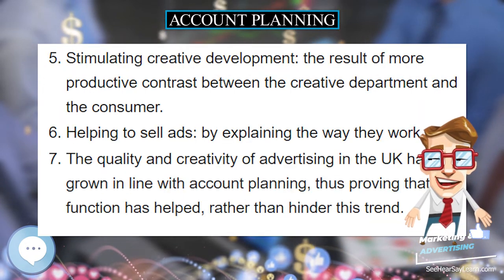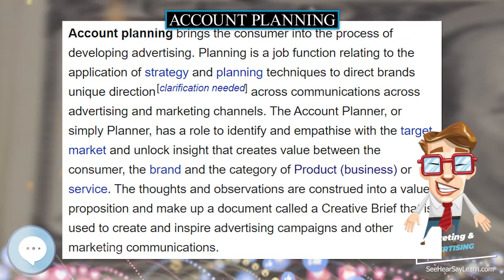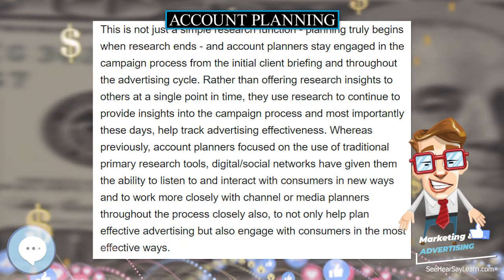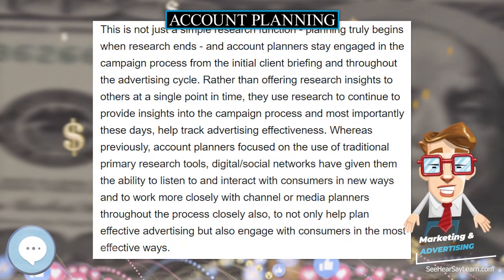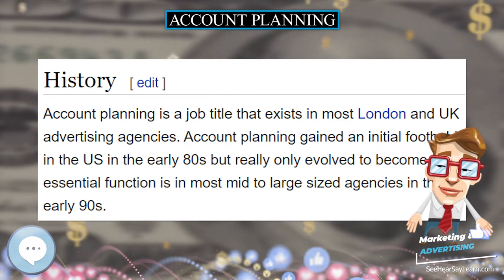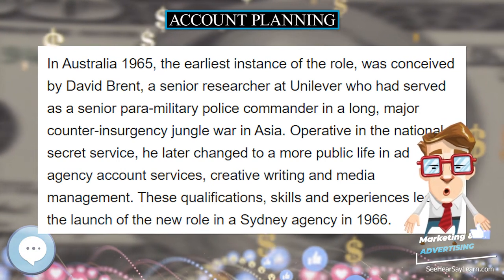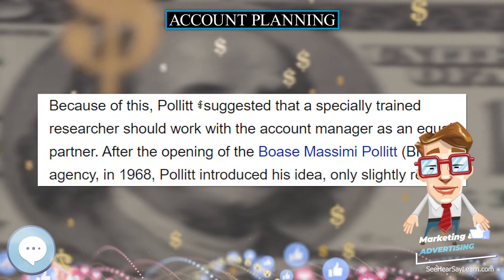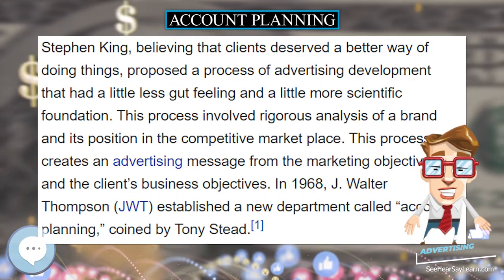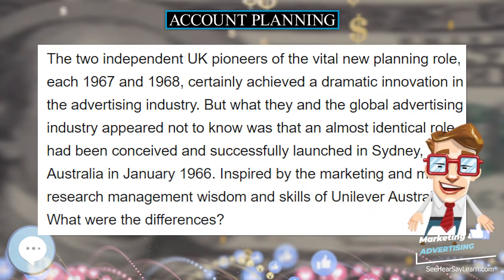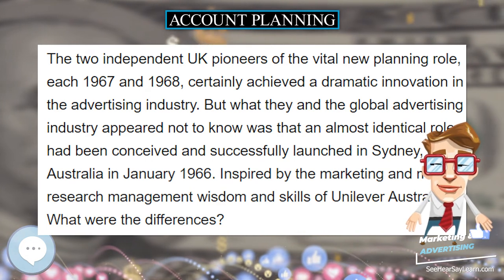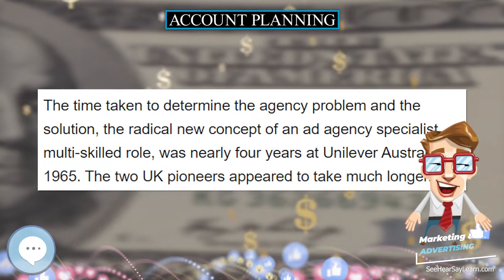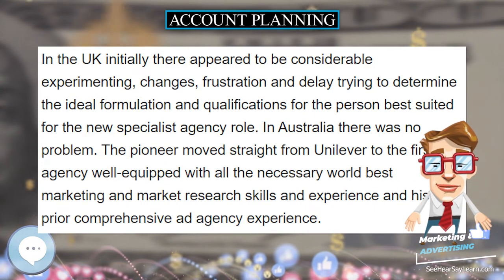Stanley Pollett believed three attributes are essential in producing effective account planning. First, it means total agency management commitment to getting the advertising content right at all costs — creating effective advertising instead of focusing on maximizing profits or keeping clients happy. Pollett believed you could only make professional judgments about advertising content with some early indication of consumer response. Second, the agency commits resources to allow planners to be more than temporary role players — account planners must be given the leeway to work with the data and research they see fit, and must not be stretched over too many accounts.